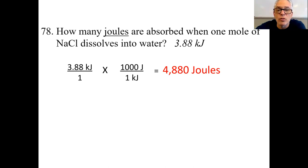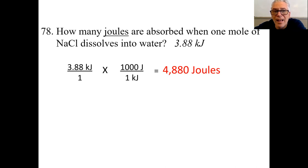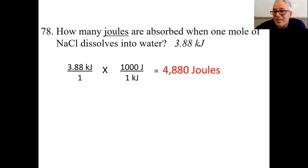Kilos are big, joules are little — there are 1,000 joules in a kilojoule. So 3.88 kilojoules over one, multiplied by the conversion factor: 1,000 joules equals one kilojoule. We need kilojoules in the denominator; they cancel. Bada bing, bada boom. This is not hard — it's a one-step unit conversion. You just put your finger in the box and do the conversion. It's new, but it's not hard. Don't get excited. Calm down, sit back. We're going to do some more.